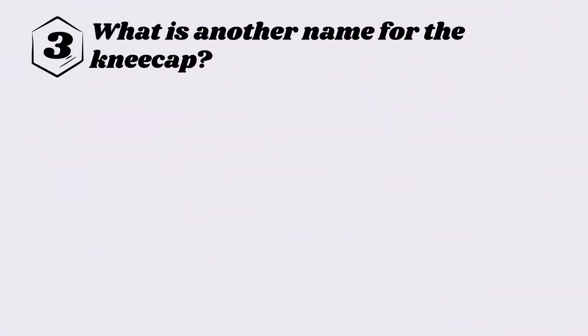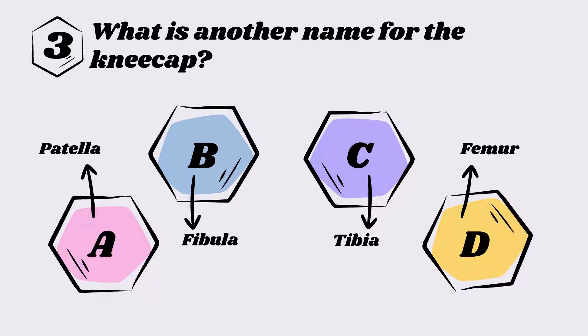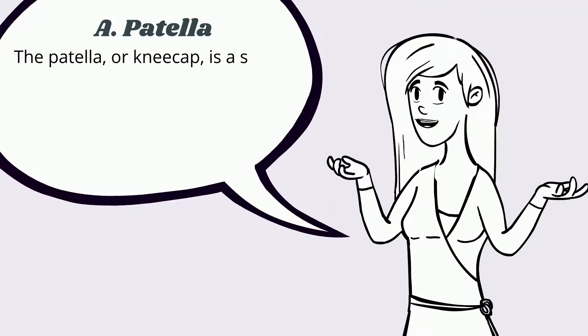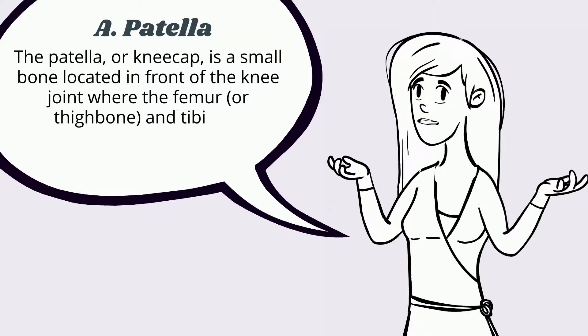Question three: What is another name for the kneecap? A) Patella, B) Fibula, C) Tibia, D) Femur. The answer is A, patella. The patella, or kneecap, is a small bone located in front of the knee joint, where the femur, or thigh bone, and tibia, or shin bone, meet.